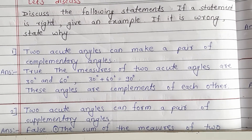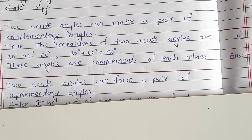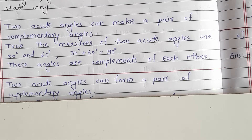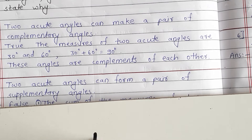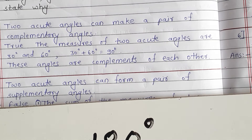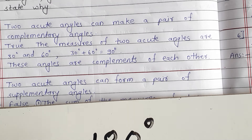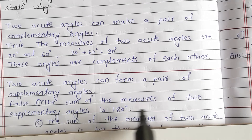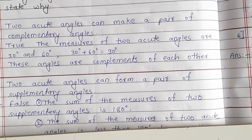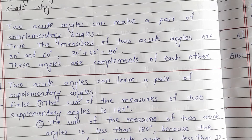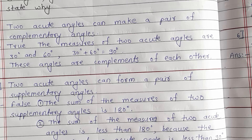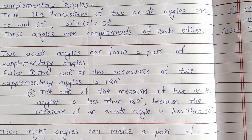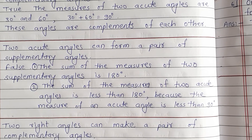Second statement: two acute angles can form a pair of supplementary angles. An acute angle means less than 90 degrees, and supplementary angles sum to 180 degrees. The sum of the measures of two acute angles is less than 180 degrees because the measure of an acute angle is less than 90 degrees.